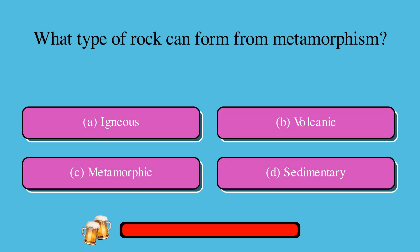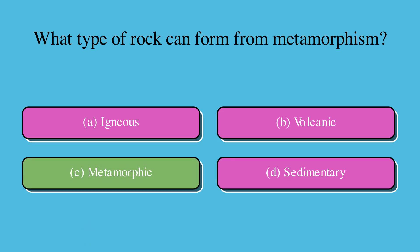What type of rock can form from metamorphism? A. Igneous, or B. Volcanic, or C. Metamorphic, or D. Sedimentary? The correct answer is C. Metamorphic.